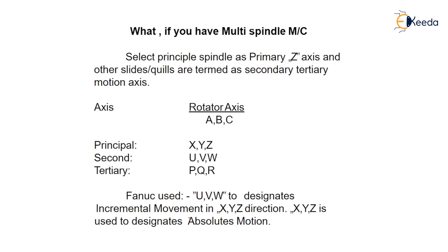Rotary axes are denoted as A, B, and C. When the work table is moving along its axis, it has the B axis; if a tool is moving along its axis, it has the A axis. The principal axes are X, Y, Z along which tool motion is done. There are also secondary incremental movements denoted as U, V, W with respect to previous positions. Tertiary axes — P, Q, R — are sometimes used, but most cases use only principal and secondary axes.